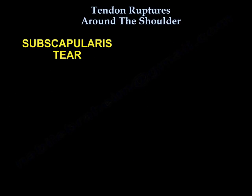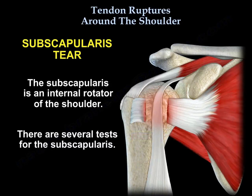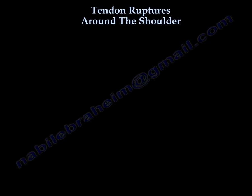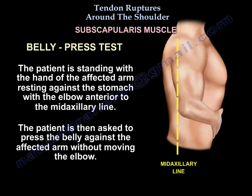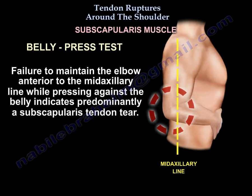Subscapularis tear. The subscapularis is an internal rotator of the shoulder, and there are several tests for it. The belly press test: the patient is standing with the hand of the affected arm resting against the stomach with the elbow anterior to the mid-axial line. The patient is then asked to press the belly against the affected arm without moving the elbow. Failure to maintain the elbow anterior to the mid-axial line while pressing against the belly indicates a subscapularis tendon tear.